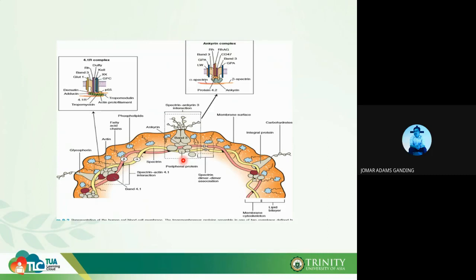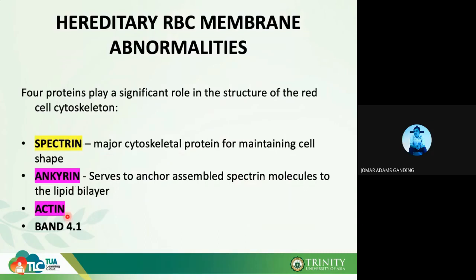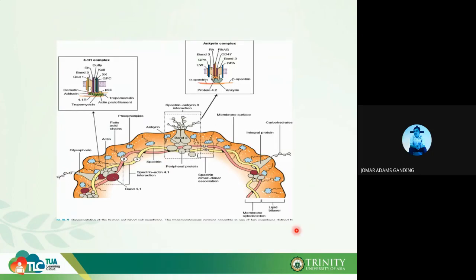Spectrin, on the other hand, is a cytoskeletal protein responsible for the lateral or horizontal interaction. Your alpha and beta spectrin — shown as yellow and red bands — maintain the horizontal interaction on the cell membrane, functioning to maintain the biconcave cell shape. So ankyrin and actin handle vertical interactions, while spectrin handles lateral interactions.